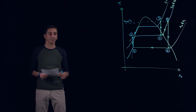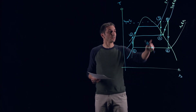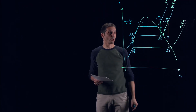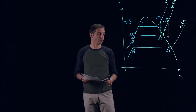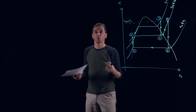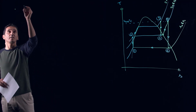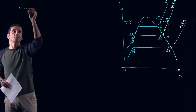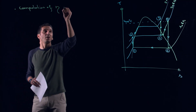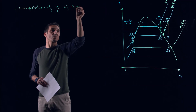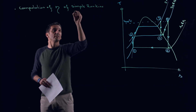Here is the sketch of our problem. From state 1 to state 2 we have the pump, then 2 to 3 is the boiler, 3 to 4 is the high pressure turbine, 4 to 5 is the reheat, 5 to 6 is the low pressure turbine, and 6 to 1 is the condenser. We are looking for the thermal efficiency of this simple Rankine cycle with reheat.